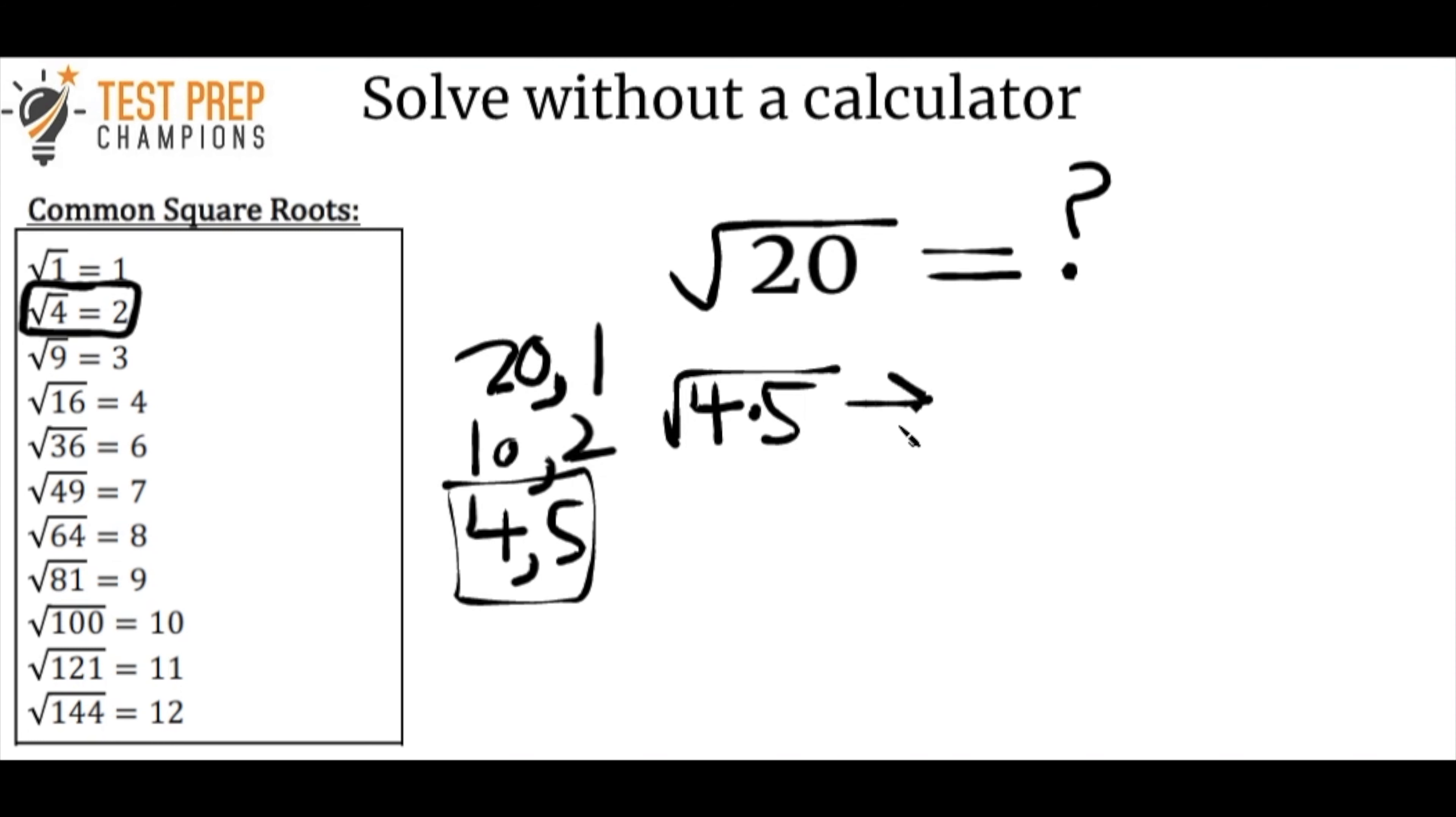And now we can rewrite this again as the square root of 4 times the square root of 5. And now here's where I'm going with this. So remember that the square root of 4 is on our list of common square roots. It's just 2. So we can actually rewrite this again as 2 square root of 5. And that's actually going to be the answer. So without a calculator, this is as far as you can go. But the answer is 2 square root of 5.